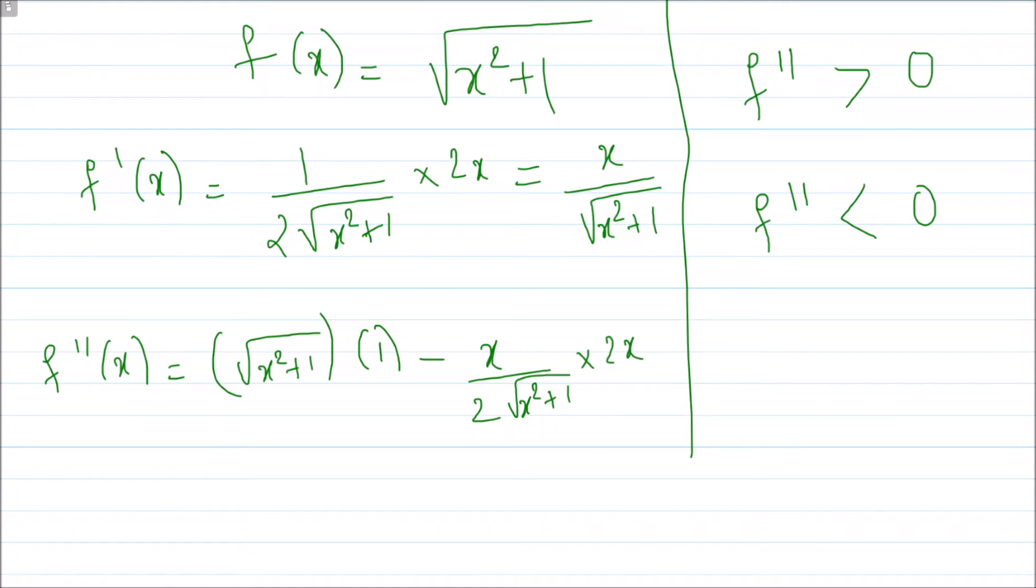If you try to simplify this further, if you do the cross multiplication and canceling, what do I get? The 2's cancel. If I do the cross multiplication, I have x squared plus 1 minus x squared, whole divided by x squared plus 1 raised to 2.